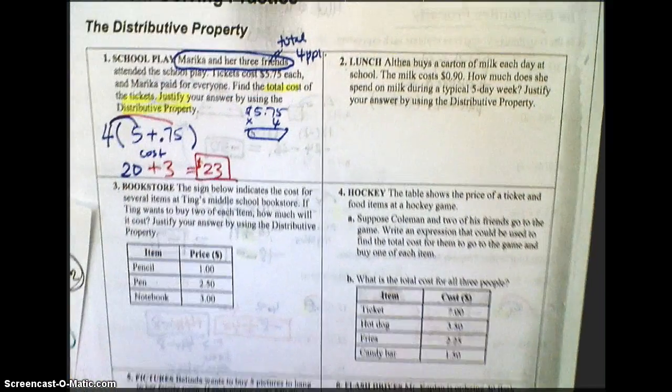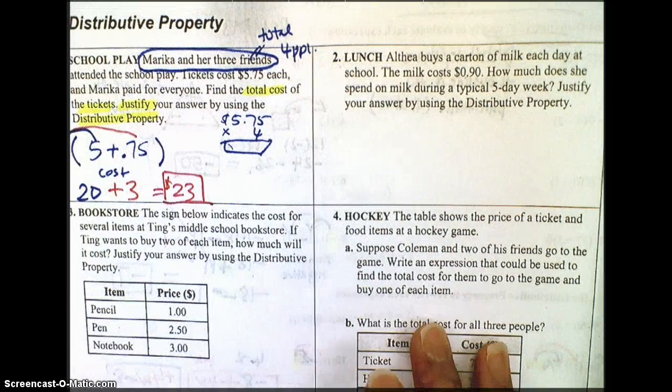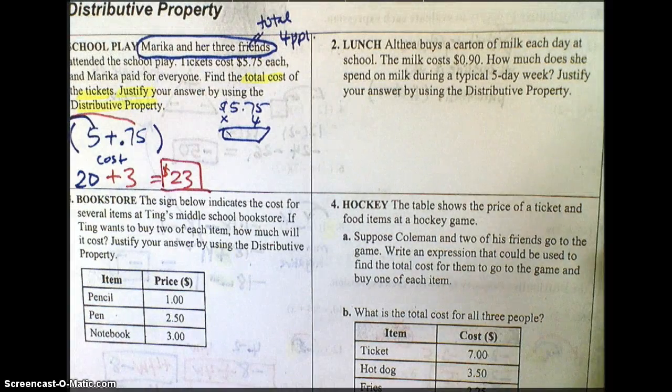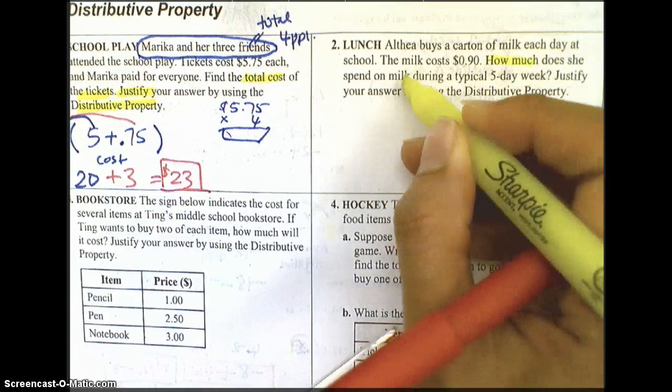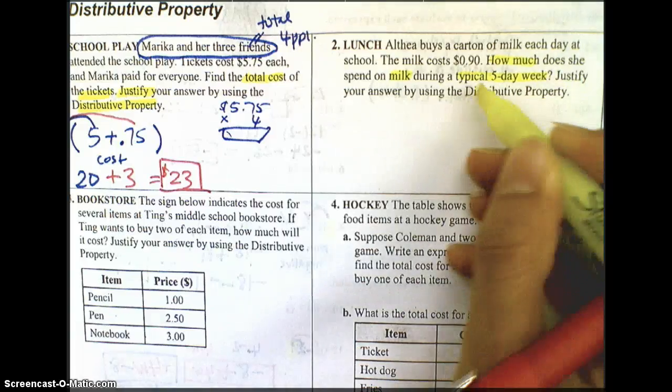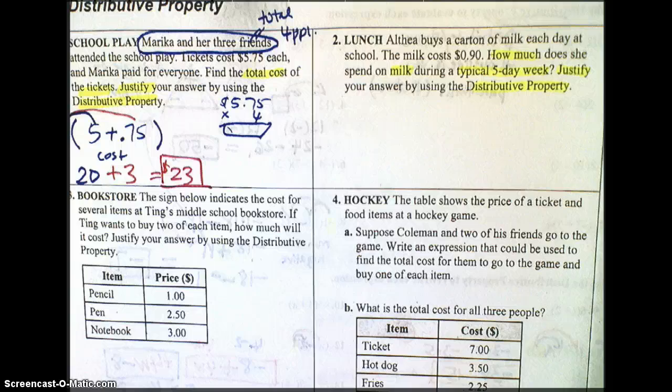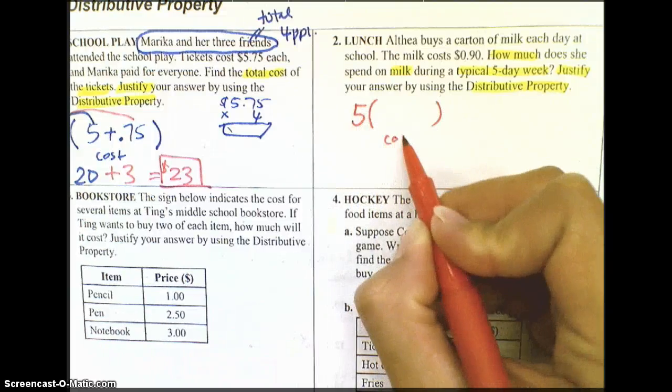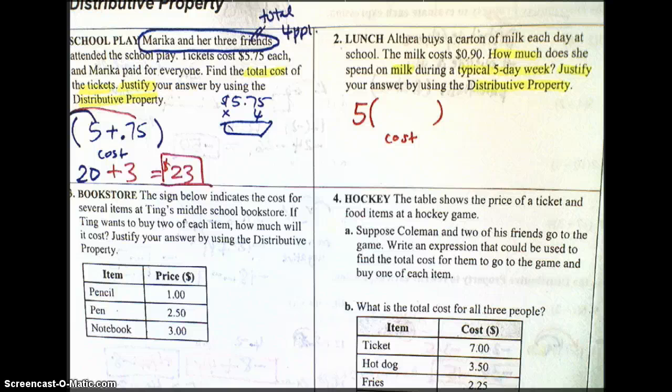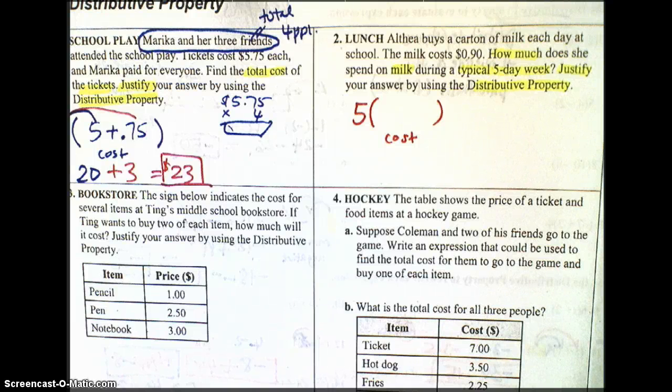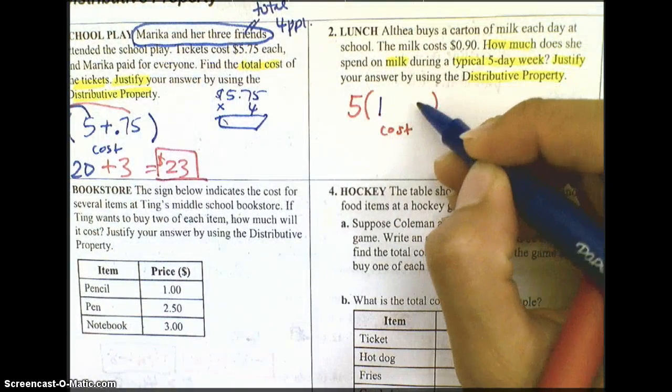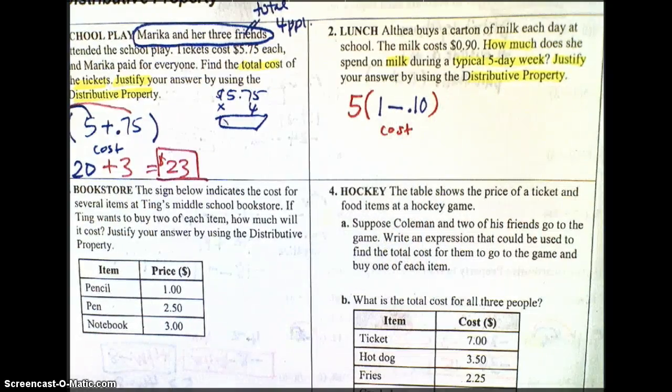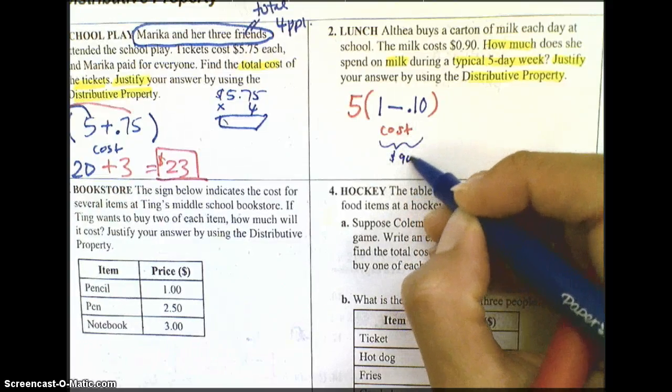Let's try number two. Let's try it in a couple different ways to set it up using distributive property. Please pause here to read the question yourself. All right. So we have how much is it going to cost for the milk in five days, and we're going to justify using the distributive property. We are buying milk every day for five days. So we're going to do five times the cost of the milk. The cost of the milk is 90 cents. Now, that's pretty close to a dollar. So why don't we round it up to a dollar? But we are rounding it up, so we do have to subtract an extra 10 cents from the dollar to have our cost equaling 90 cents.